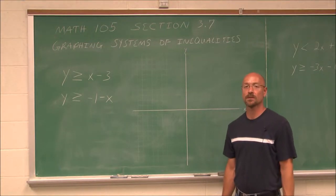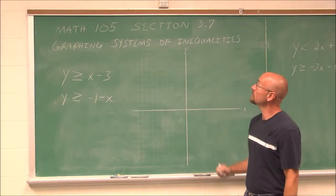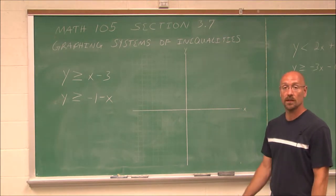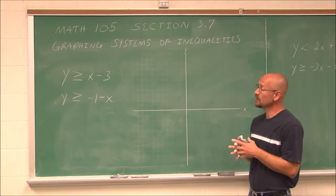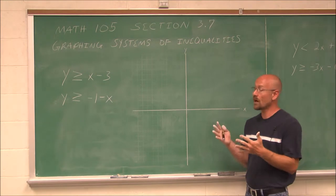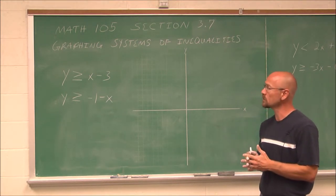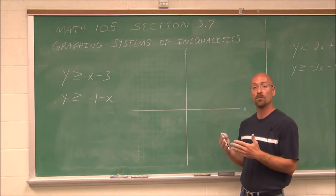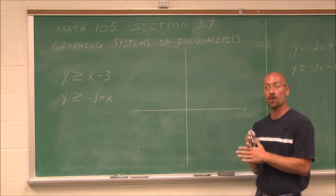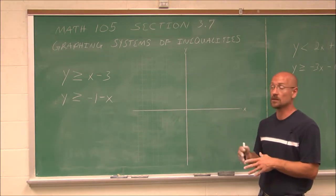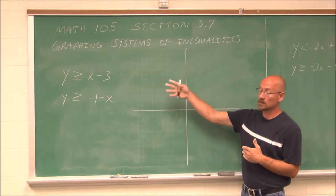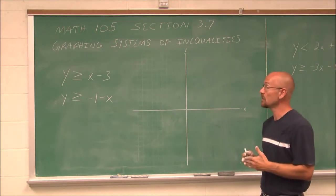Hello, and welcome to Bay College's video lectures for intermediate algebra. In this video, we're going to look at section 3.7, graphing systems of inequalities. In the previous section, we were graphing linear inequalities in two variables. Sometimes we want to graph more than just one equation of a line and to see where they're going to overlap in their inequality. So we're looking for an area of the graph that makes two separate inequalities a solution to both of them simultaneously.